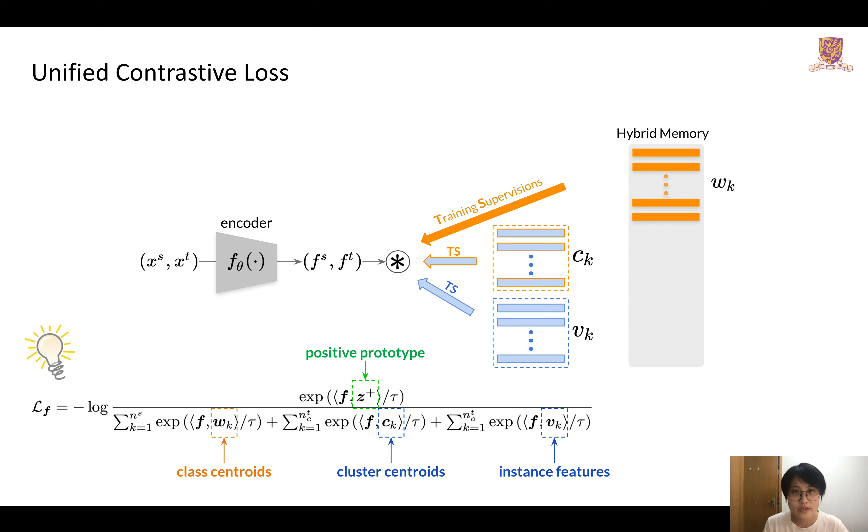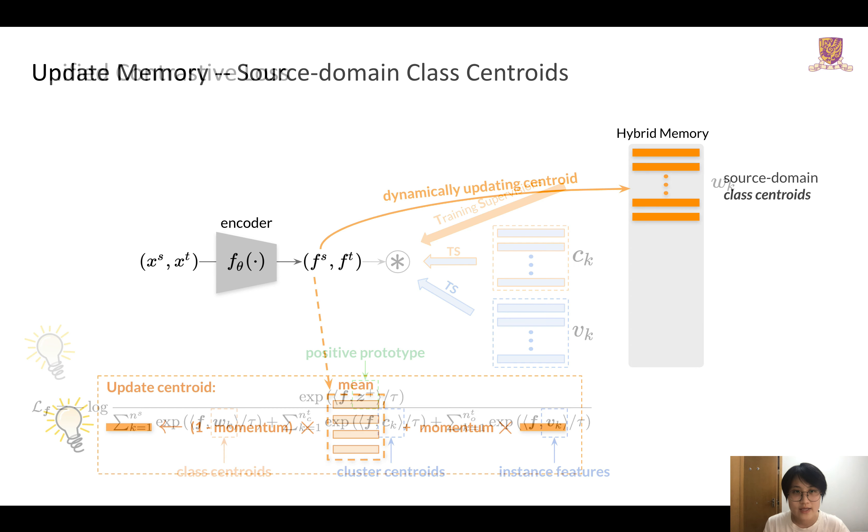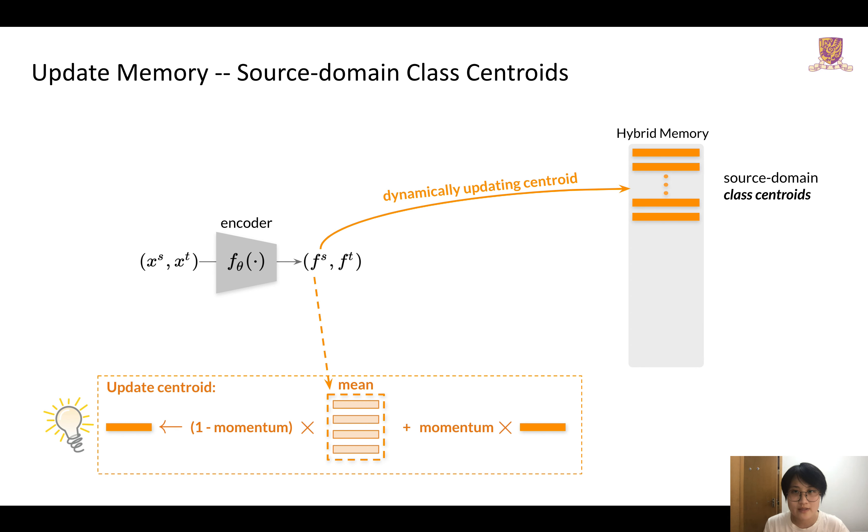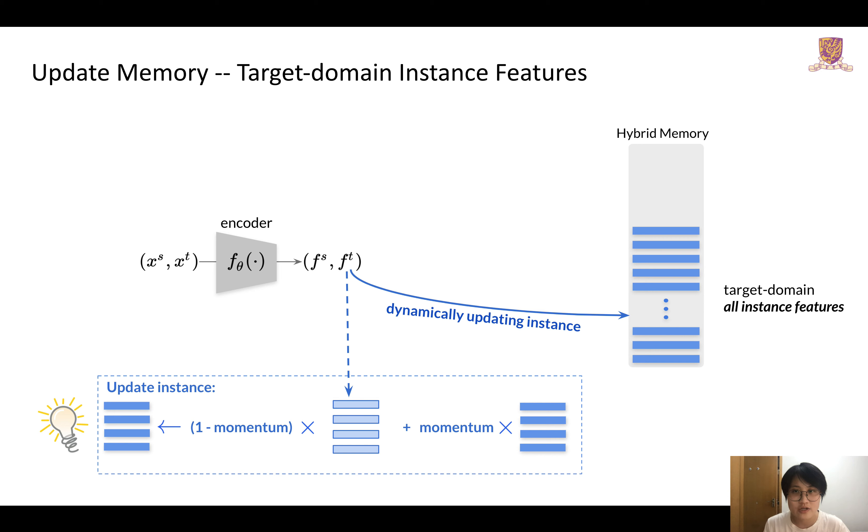So, how could we achieve these prototypes? The hybrid memory stores and updates them with a momentum strategy. The source domain data are cached in the form of ground truth classes, while all the target domain data are cached in the form of instances, since there are no ground truth classes provided and the cluster labels are dynamically changed.